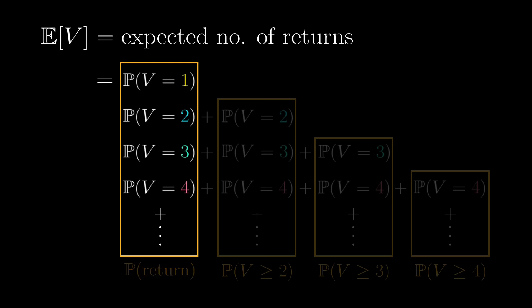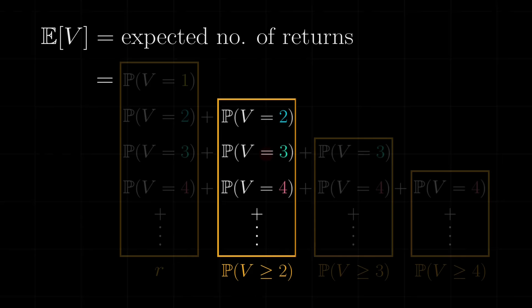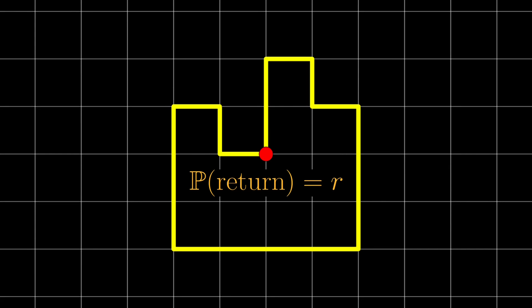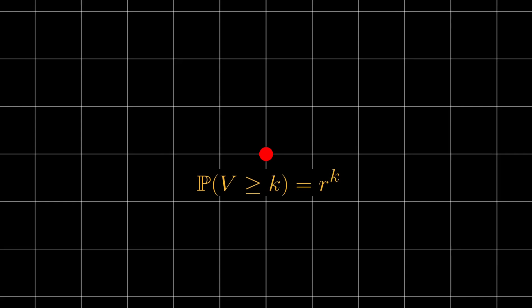What about the probability of returning at least twice? Well, the probability that you will return is r, but again by the Markov property, you should forget that you have returned, and so the probability that you return again is to multiply by another r. And in general, the probability of returning at least k times is r to the k.